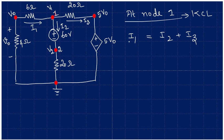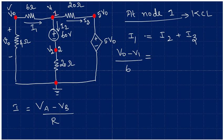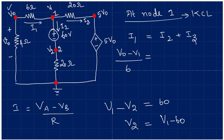Now we have to apply Ohm's Law. I is equal to the potential difference VA minus VB divided by the resistance. So we can write I1 as V0 minus V1 divided by 6 ohms. For I2, we note that the potential difference V1 minus V2 equals 60 volts, so V2 equals V1 minus 60. The current through the 20 ohm resistance is V2 minus 0 divided by 20 ohms.